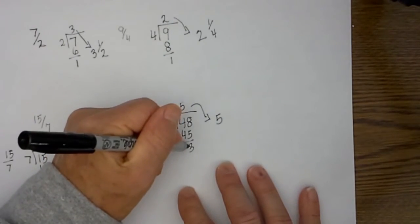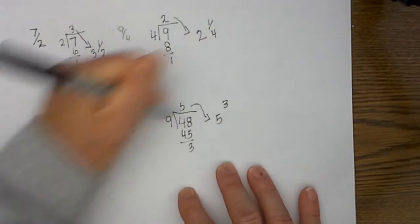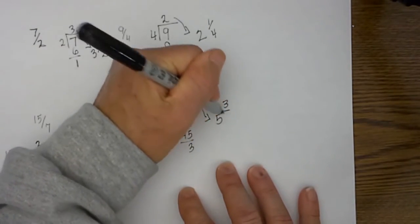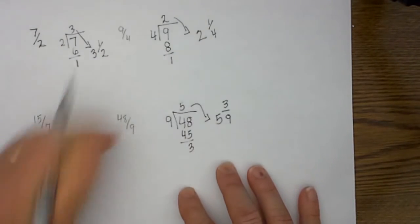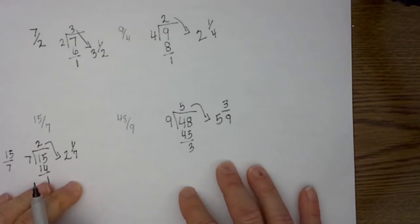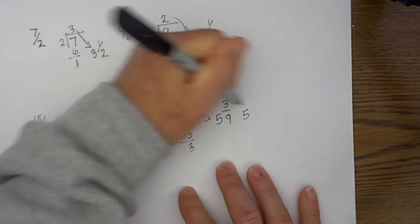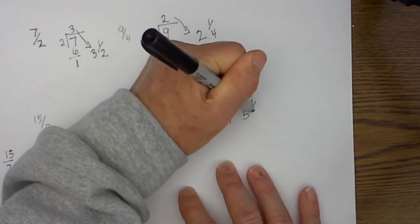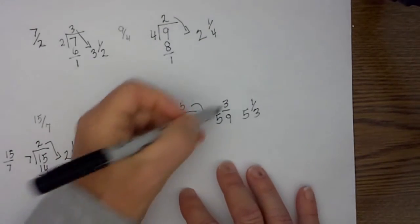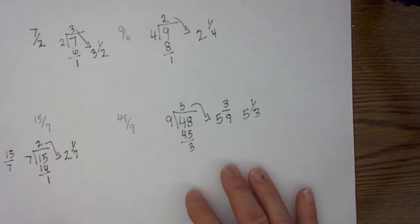Then the 3 becomes the numerator, and the 9 becomes the denominator. In this we can further reduce because we know that 3 ninths will easily become 1 third, because they are both divided by 3.